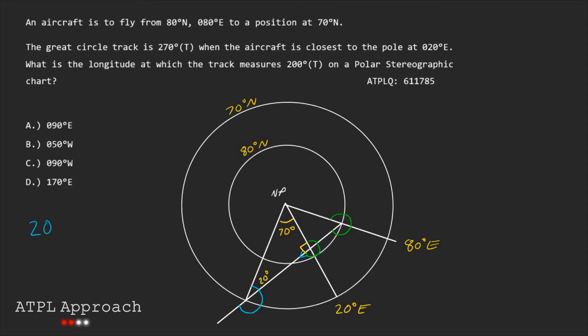20 degrees minus 70 degrees. Well that gives us minus 50 degrees. What does that mean? Well that just means that we've gone 50 degrees past the Greenwich Meridian which is this line over here. And 50 degrees the other way is just 50 degrees west. So that's our answer.